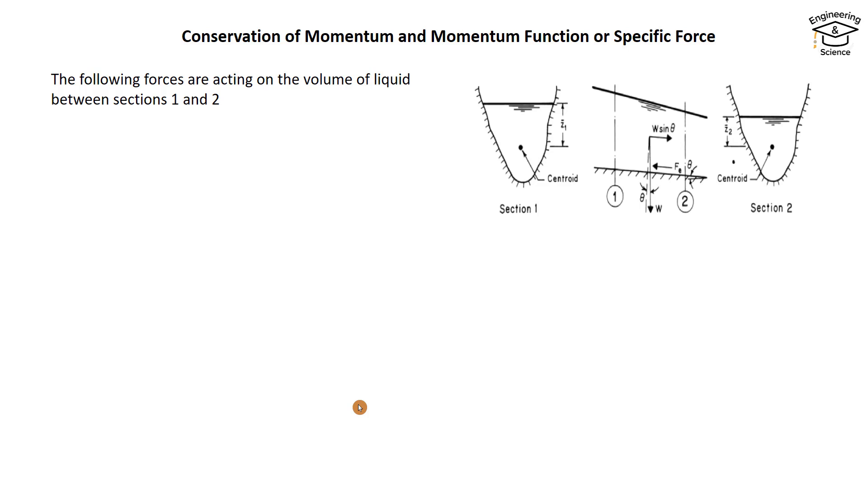The following forces are acting on the volume of liquid between sections 1 and 2. Pressure force at section 1 equals γ × z̄₁ × A₁, and pressure force at section 2 equals γ × z̄₂ × A₂.